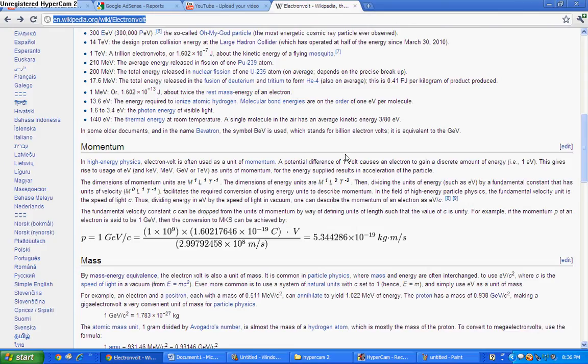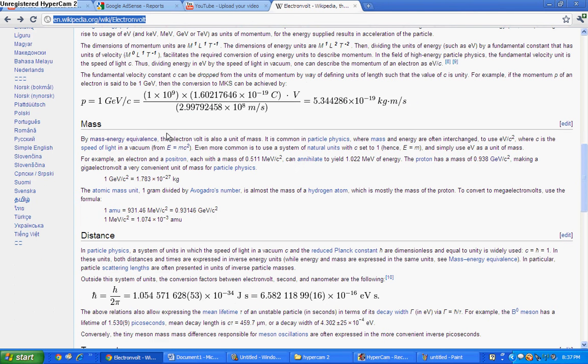As you can see here, like where it says right here, it says, thus dividing energy in electron volts by the speed of light in a vacuum. One can describe the momentum of electron volts as electron volts over c, which is the speed of light in a vacuum, as described in e equals mc squared, which actually comes up a lot in what I'm talking about. But the electron volt is also very useful, because as well as being able to describe momentum, as you can see here, it can also describe mass.